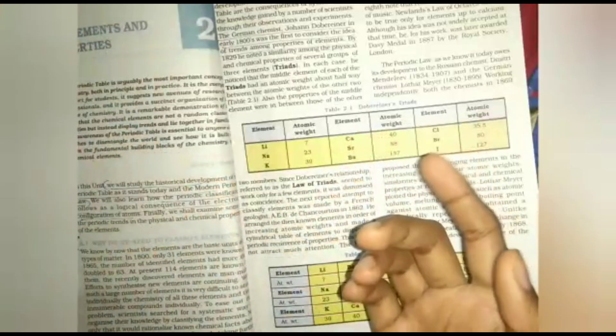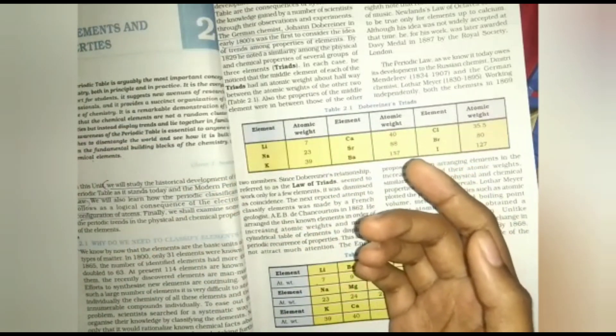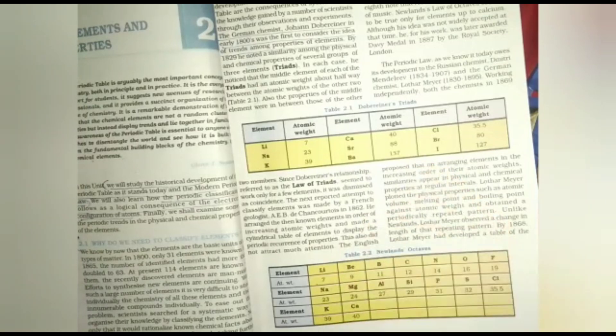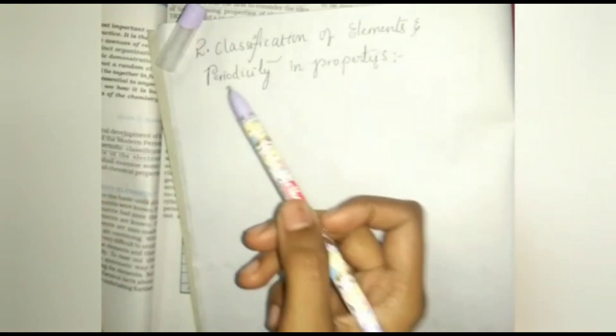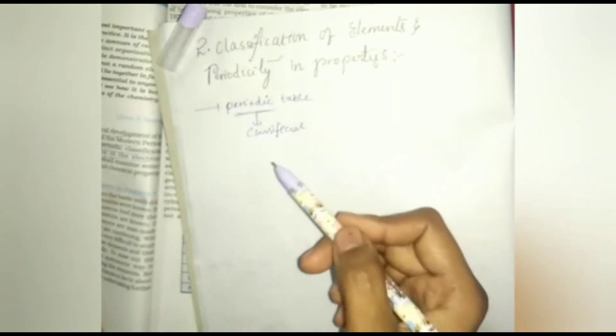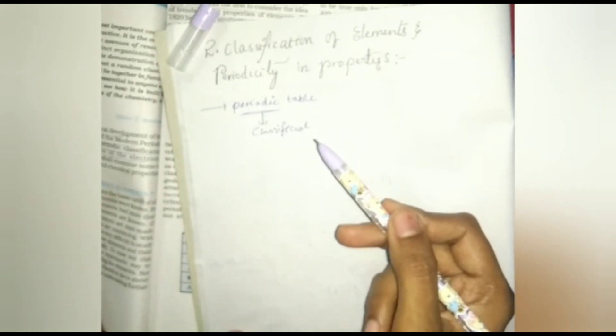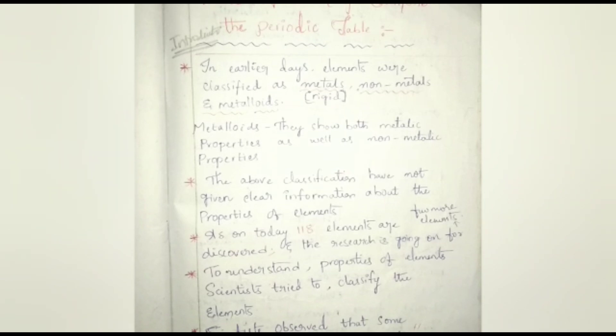In earlier classes — I think in 9th or 10th — we studied about classification of elements and the periodic table, so let's revise some important points. In this chapter we will study the historical development of the periodic table and modern periodic law, how periodic classification follows as a logical consequence of electronic configuration of atoms, and periodic trends in the physical and chemical properties of the elements.